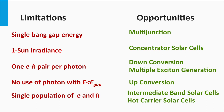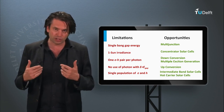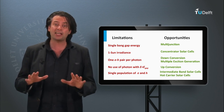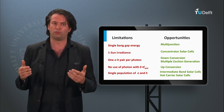The last problem in the list is that of a single population of each charge carrier. In theory, this can be tackled by hot carrier solar cells, where the charge carriers are collected just after light excitation, before they relax back to the edges of the electronic bands. Another theoretical solution is the concept of intermediate band solar cells — an electronic band within the bandgap is intentionally engineered to enable photons below the bandgap to help additional electrons to be excited as well. Note that besides the multi-junction and concentrator approach, none of these concepts have resulted in high efficiency solar cells or even been demonstrated yet; these other concepts are still in a fundamental research phase.